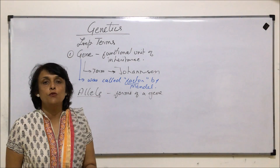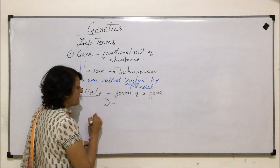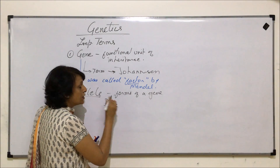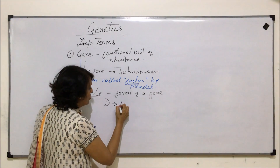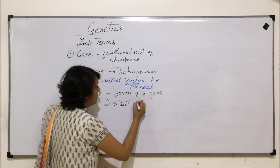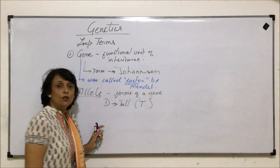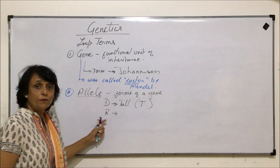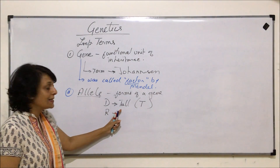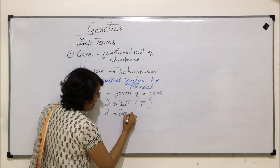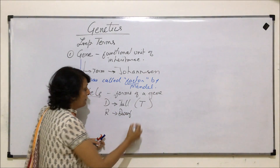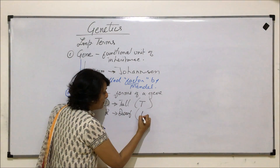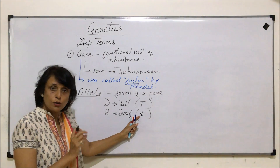There is a simple rule which we normally follow. The dominant is represented by the capital alphabet. For example, if we are talking about tall, which is a dominant trait, we would use capital T to represent the dominant form. And if we are talking about the recessive form of the same character, that is height, we know it is dwarf or short.